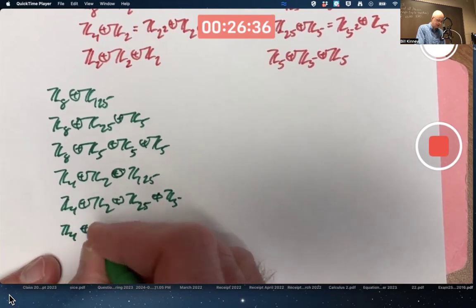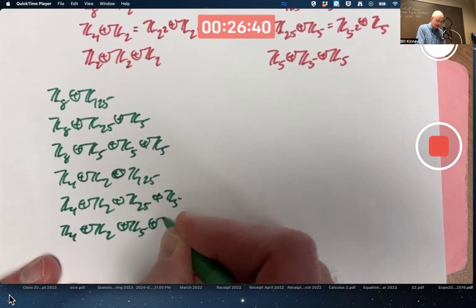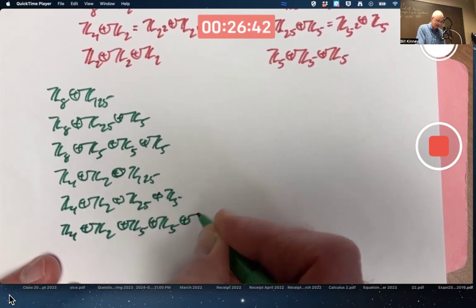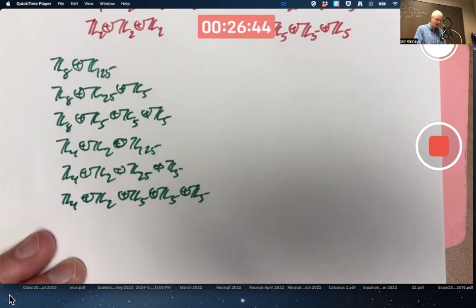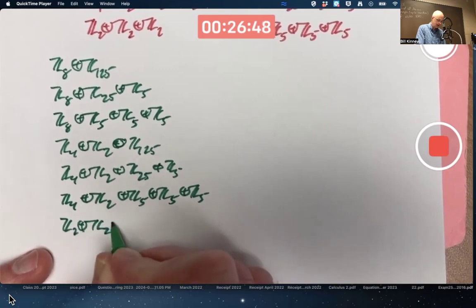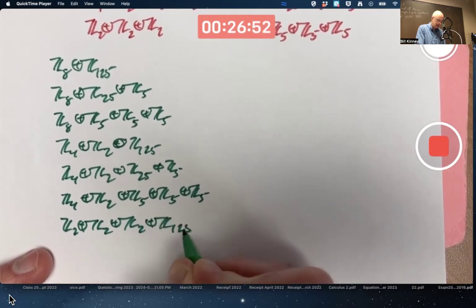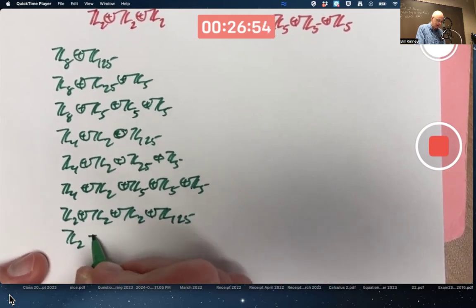Z4, Z2, and then a bunch of Z5s. Going as quick as I can here. And then three more starting with three Z2s in each case. Z5, Z5. Hang with me here.